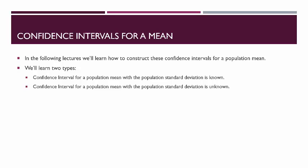In the following lectures, we'll learn how to construct these confidence intervals for a population mean. We'll cover two types: first, a confidence interval for a population mean when the population standard deviation is known — this will be more of a theoretical exercise. Then the more real-world application will be confidence intervals for a population mean when the population standard deviation is unknown, and for that second case we'll need to learn a new statistical distribution called the t-distribution.